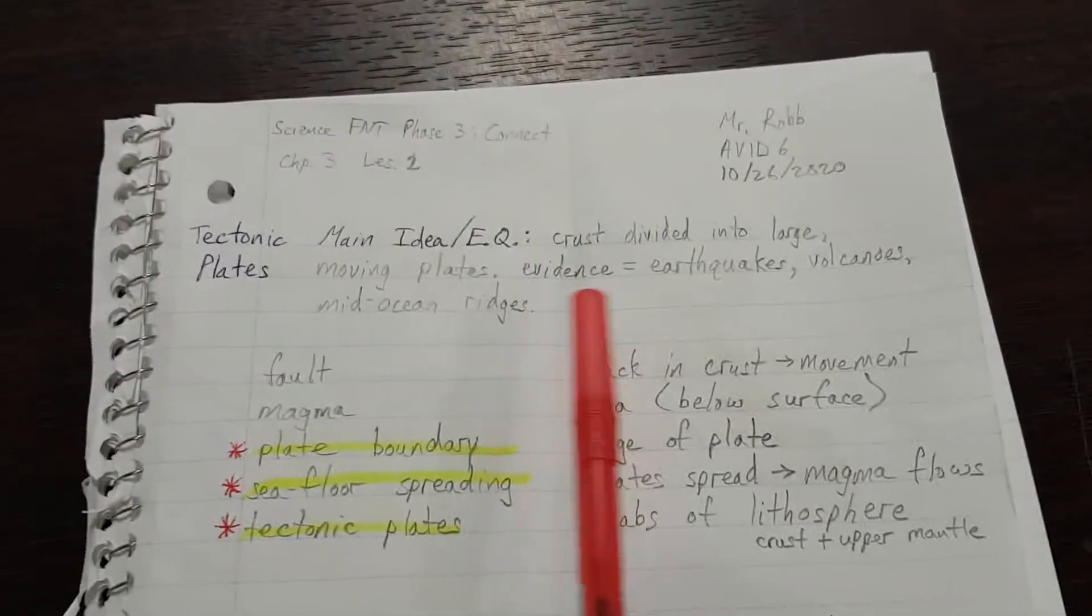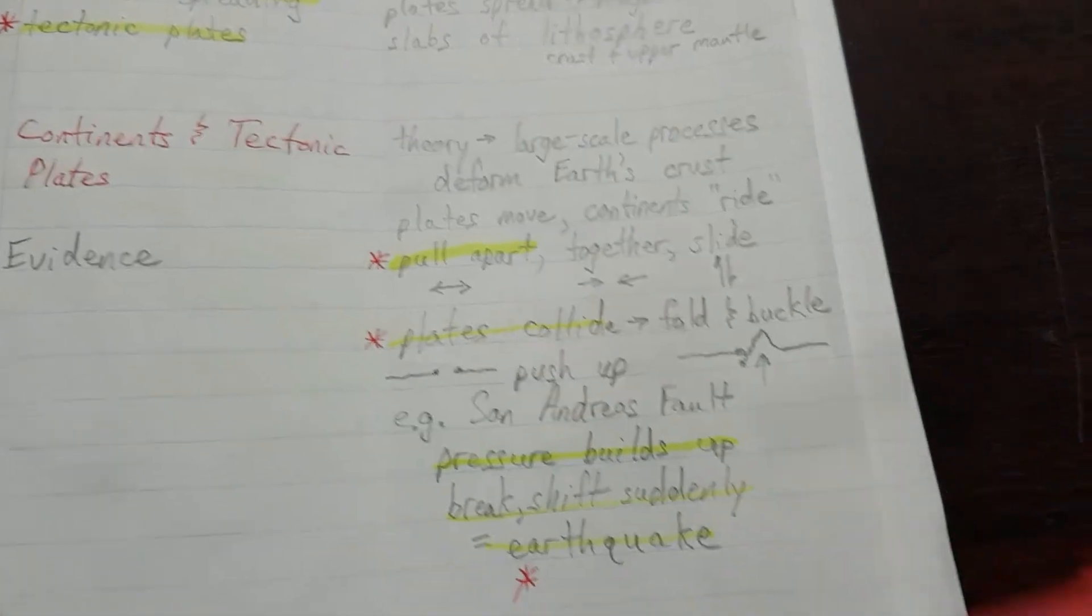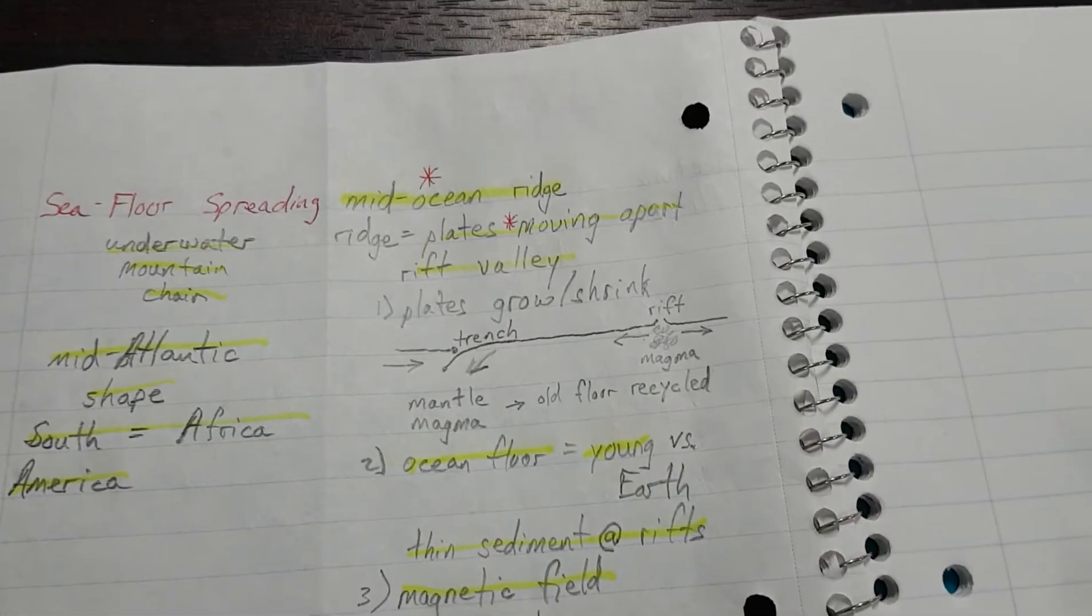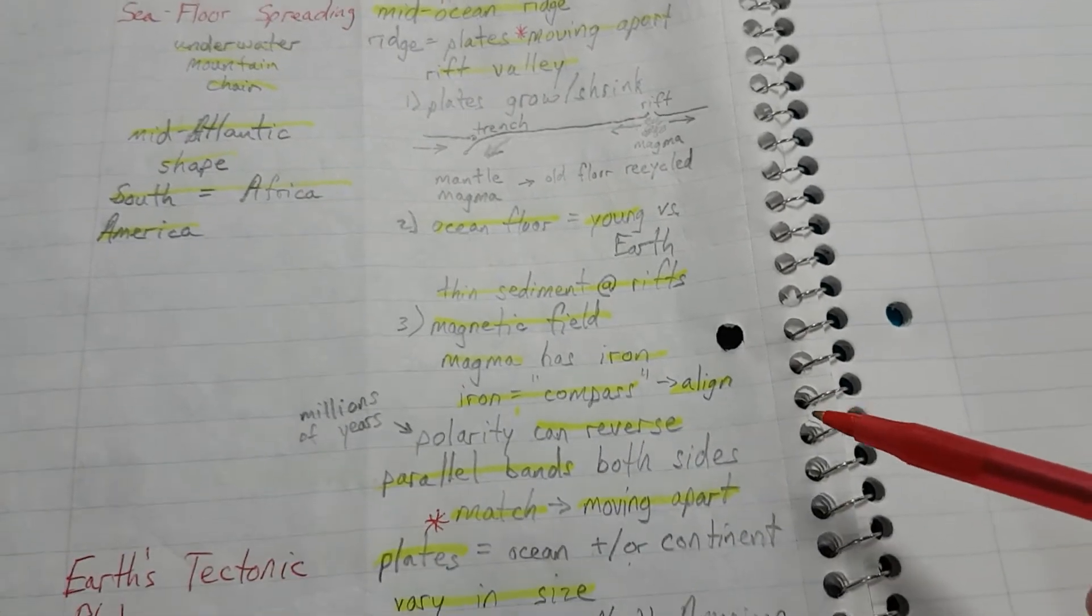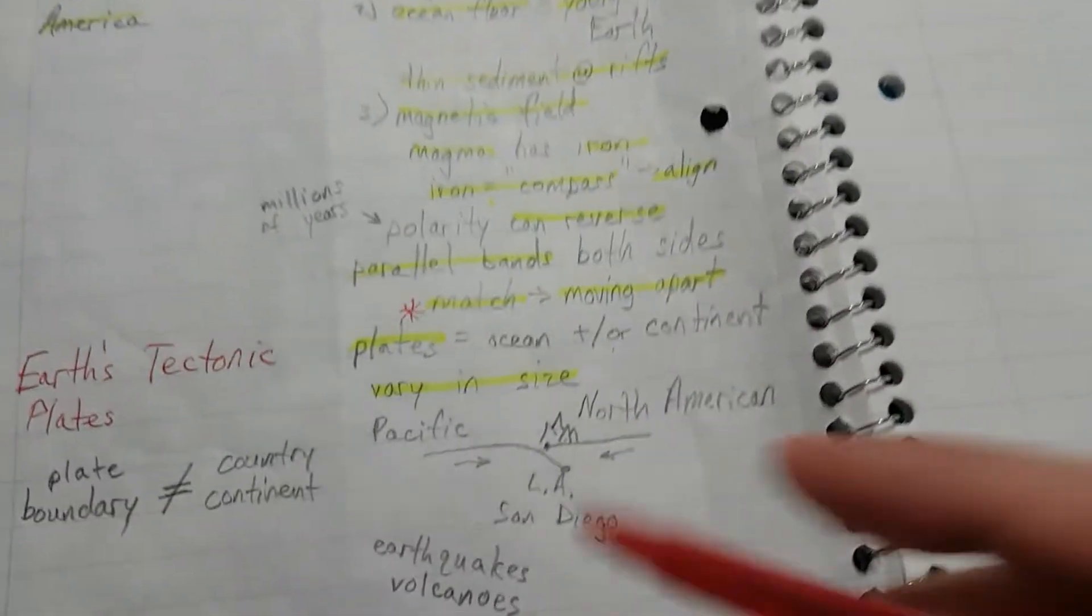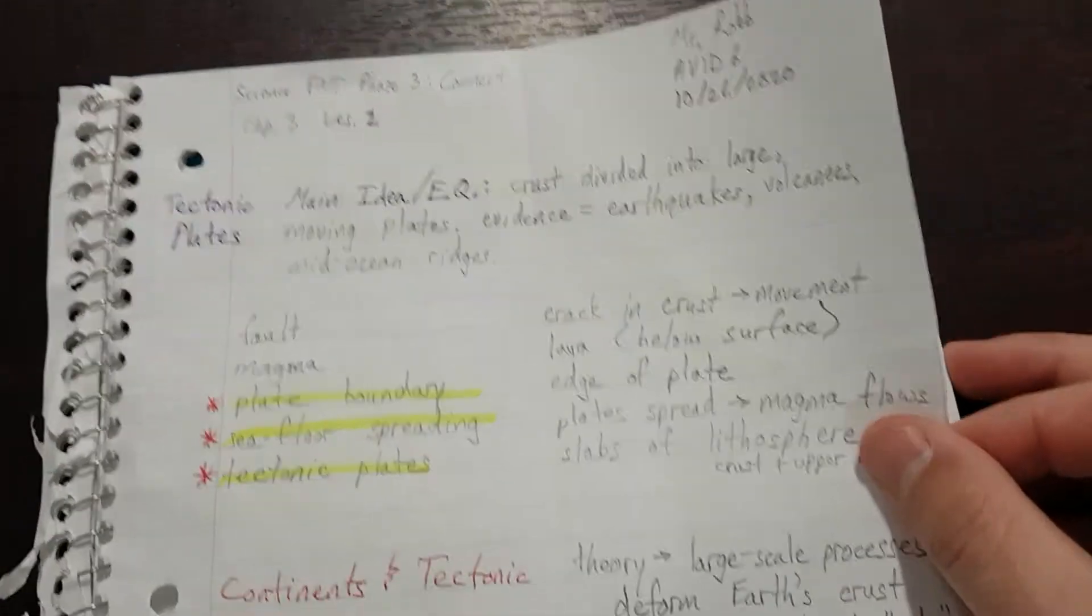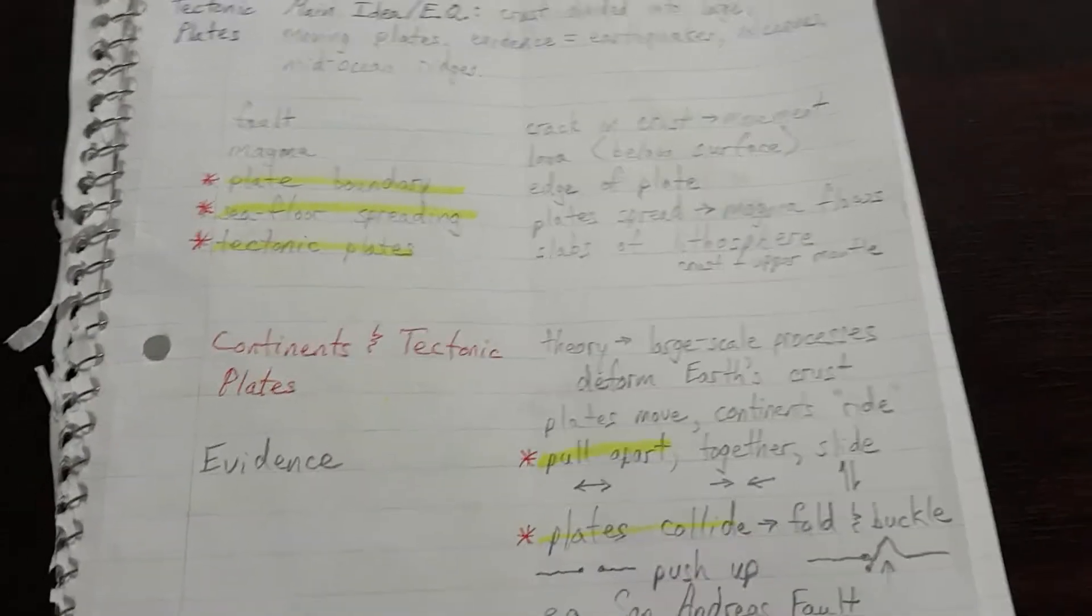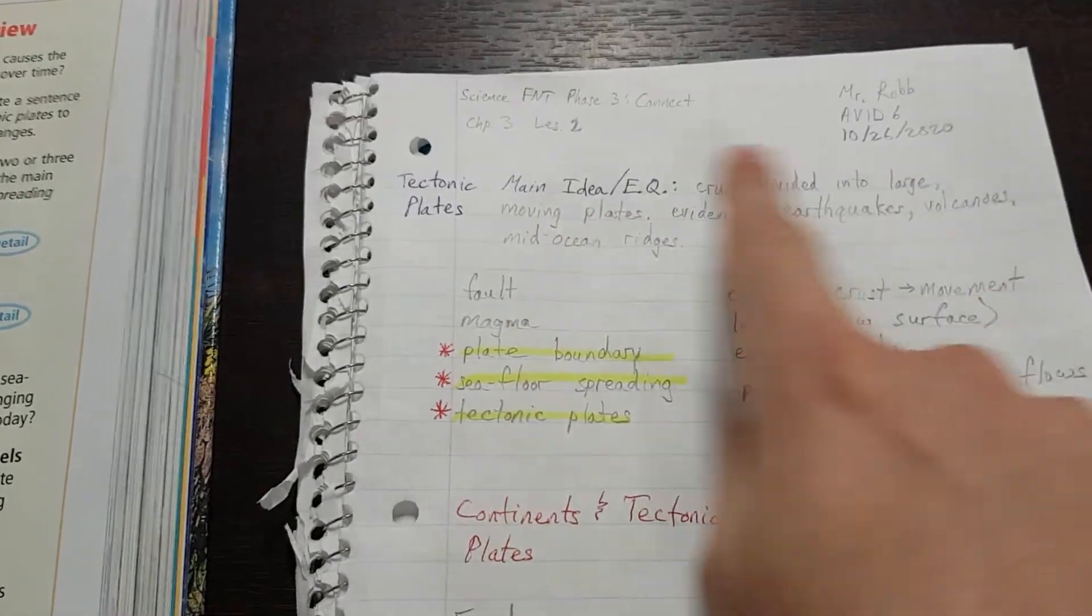Now, the second sentence of our main idea was something about evidence includes earthquakes, volcanoes, and mid-ocean ridges. Earthquakes. Volcanoes. Mid-ocean ridges. Earthquakes. Volcanoes. Mid-ocean ridges. Earthquakes. There's mid-ocean ridge. Volcanoes is highlighted, because that's what the book thinks is important, and a star, because that's what we think is important for our main idea statement.